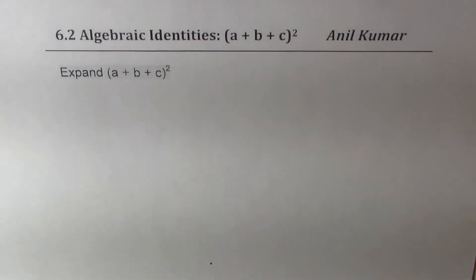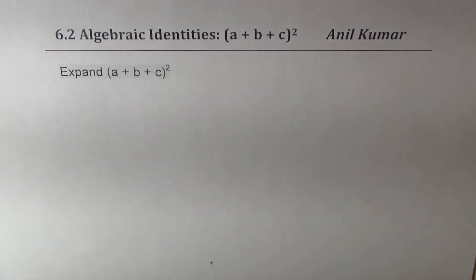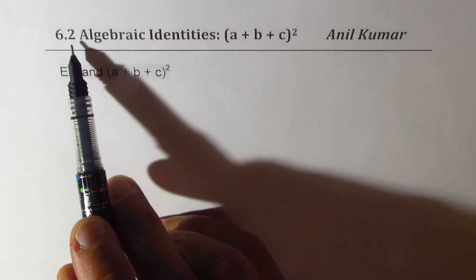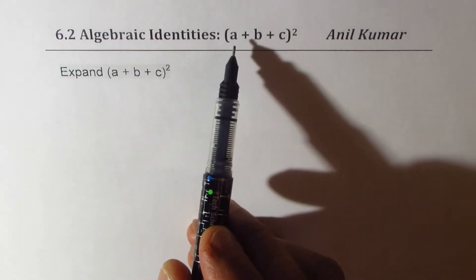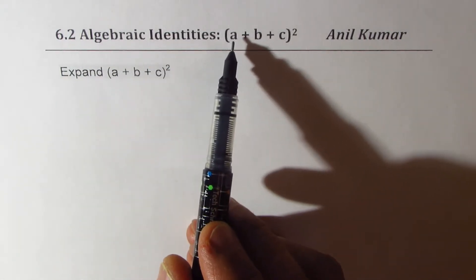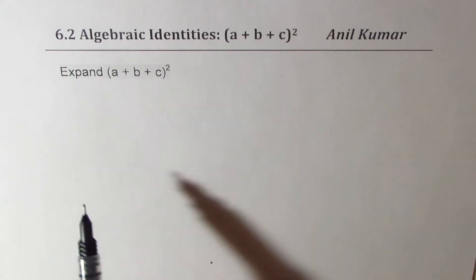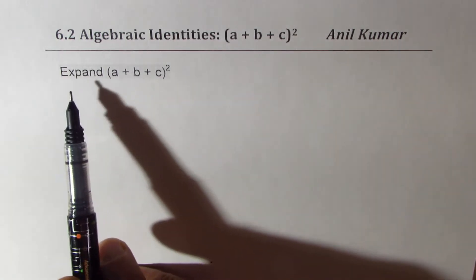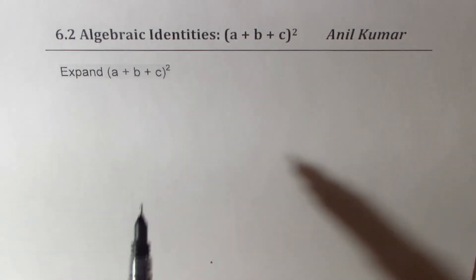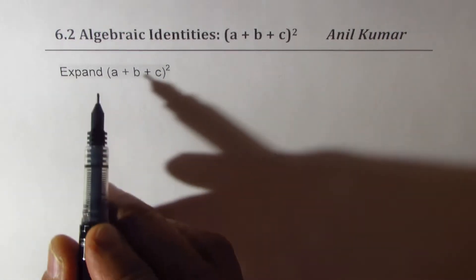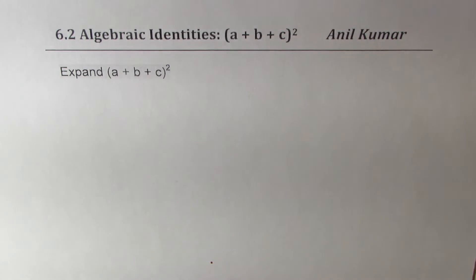I'm Anil Kumar, welcome to our series on algebraic identities. Earlier in 6.1 we learned what (a+b)² is. Now we are going to expand to (a+b+c)² and let us see what this is all about.